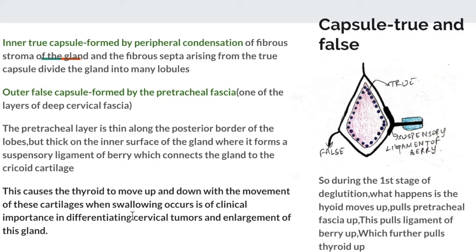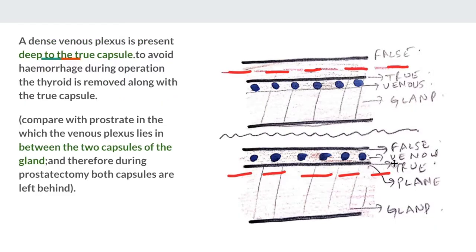Movement of the thyroid gland during deglutition is an important differentiating factor in cervical tumors. Beneath the false capsule is the true capsule, and beneath the true capsule is a rich venous plexus. Since the venous plexus lies deep to the true capsule, to avoid hemorrhage during thyroidectomy the thyroid gland is removed along with the true capsule.